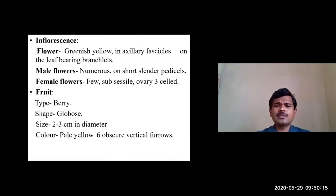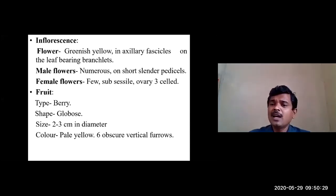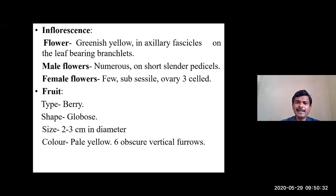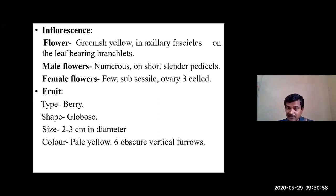The inflorescence is greenish-yellow, in axillary fascicles - clusters of two to three flowers together from the axillary region. The inflorescence develops on the leaf-bearing branchlets. Male flowers are numerous on short slender peduncles, whereas the female flowers are few. Because female flowers are few in number, the number of fruits is reduced.